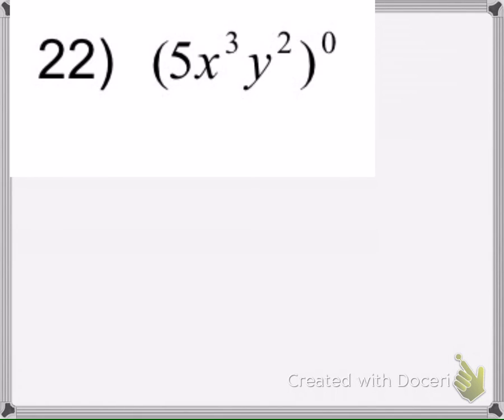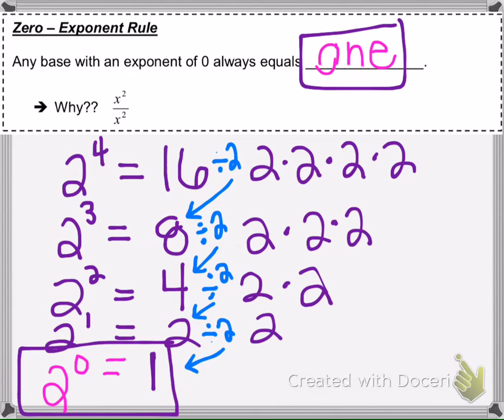Okay, like this problem here. This whole quantity is in parentheses. So this whole thing has a power of 0. So it equals 1. This whole thing is 1.